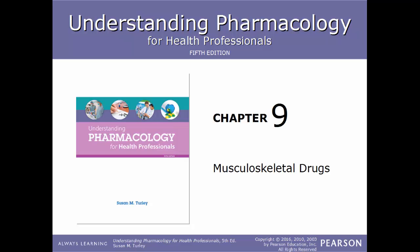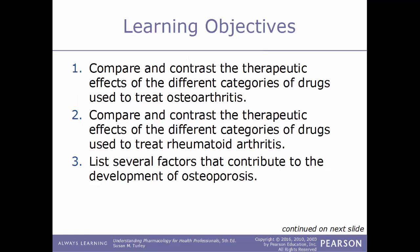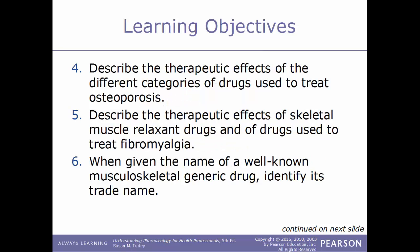Hello and welcome back to our video series on pharmacology. In this video we will continue our course on chapter number nine: musculoskeletal drugs. Learning objectives for this chapter: compare and contrast the therapeutic effects of different categories of drugs used to treat osteoarthritis, compare and contrast the therapeutic effects of different categories of drugs used to treat rheumatoid arthritis, list several factors that contribute to the development of osteoporosis, and describe the therapeutic effects of the different categories of drugs used to treat osteoporosis.